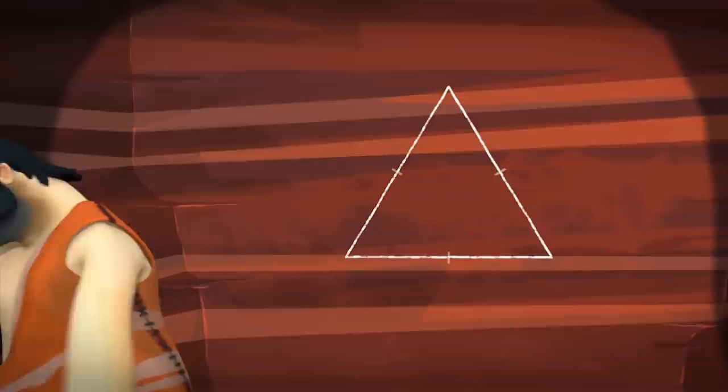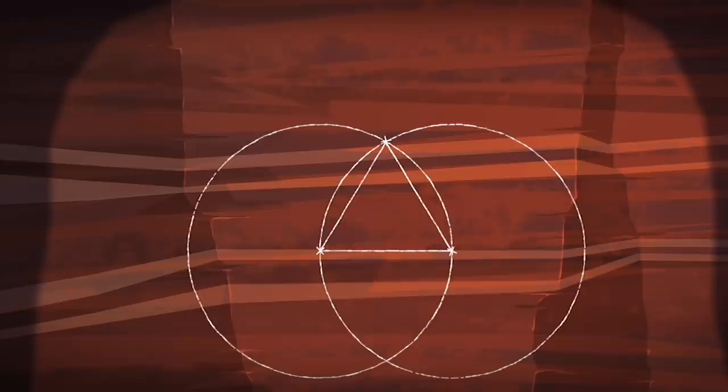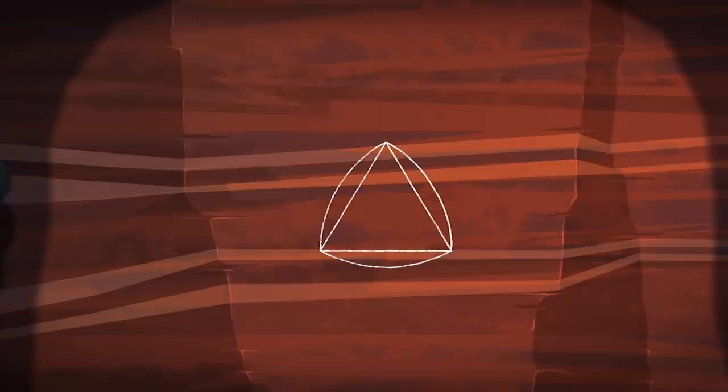Another shape with this property is the Reuleaux triangle. To create one, start with an equilateral triangle, then make one of the vertices the center of a circle that touches the other two. Draw two more circles in the same way, centered on the other two vertices, and there it is, in the space where they all overlap.